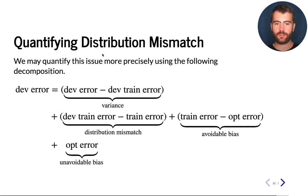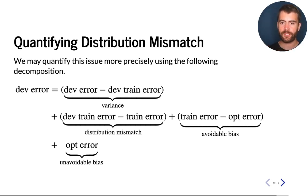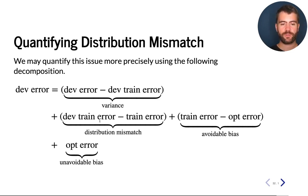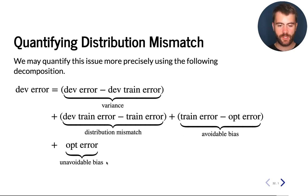We can quantify this more precisely. We saw in earlier lectures different ways of decomposing the development error into components, and now we can add an additional element — distribution mismatch. The difference between the training-dev error and the training error is precisely the distribution mismatch, and the extra error from the training-dev to the dev is generalization error or variance. Avoidable and unavoidable bias remain the same as in the previous lecture.